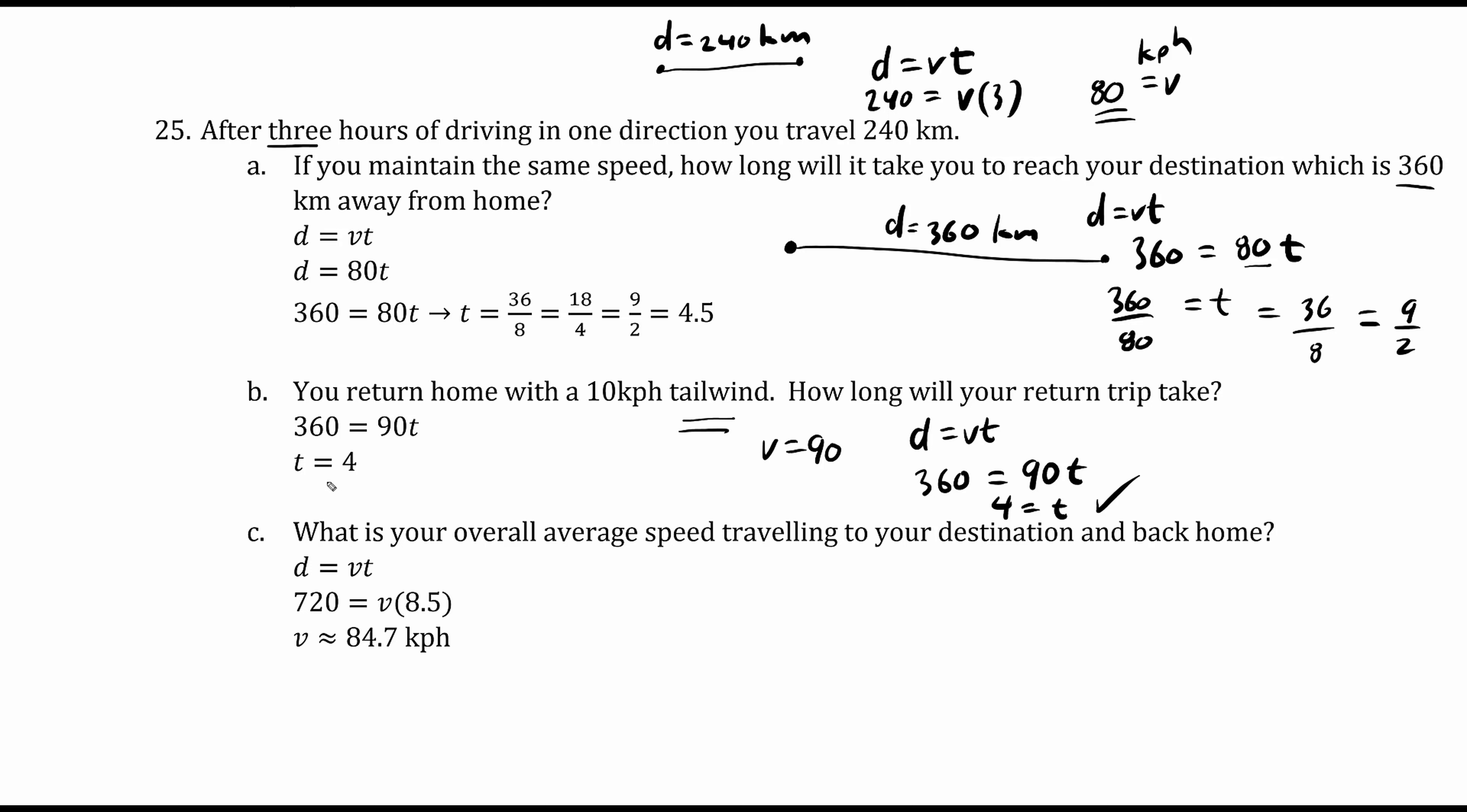Now let's find our overall average speed. We have distance equals velocity times time. The total distance there and back is 360 plus 360 which is 720. The average velocity is unknown but we know the total time. For the first part we're traveling at 80 kilometers an hour.